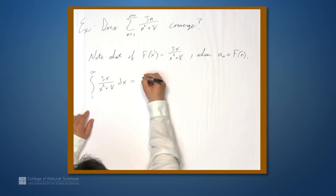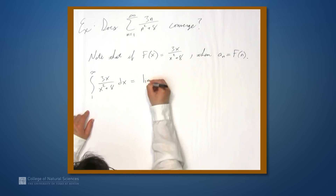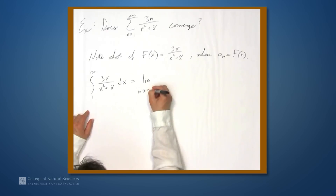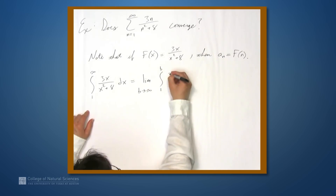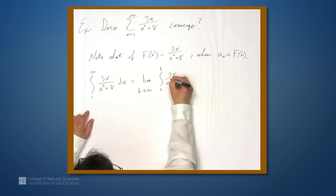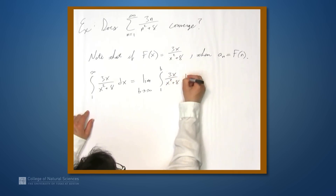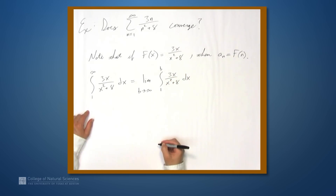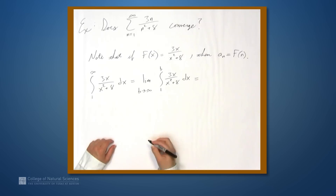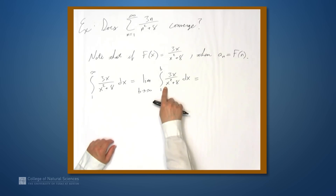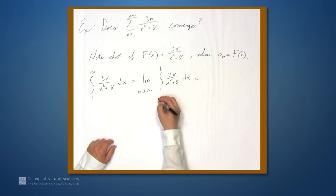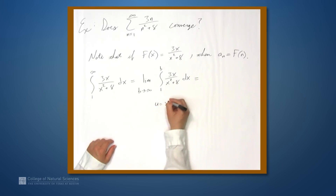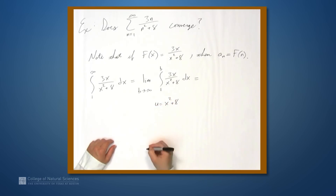So the improper integral of 3x over x squared plus 8 dx equals, by definition, the limit as b goes to infinity of the integral from 1 to b of 3x over x squared plus 8 dx. We have x squared plus 8 on the bottom and almost its derivative on the top, so let's use u-substitution. Let's set u equal to x squared plus 8.